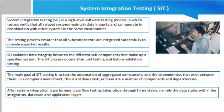System integration testing is the process of comprehensive testing performed on the application software along with the complete system, which is usually made of more than one smaller unit of software and hardware. The primary goal is to make sure the functional characteristics of the software and hardware systems are in sync. Usually in SIT, the individual modules are tested separately first and then tested again after being combined into a single system. SIT is carried out after subsystems have individually undergone unit testing. The result of SIT is then passed on to user acceptance testing (UAT).